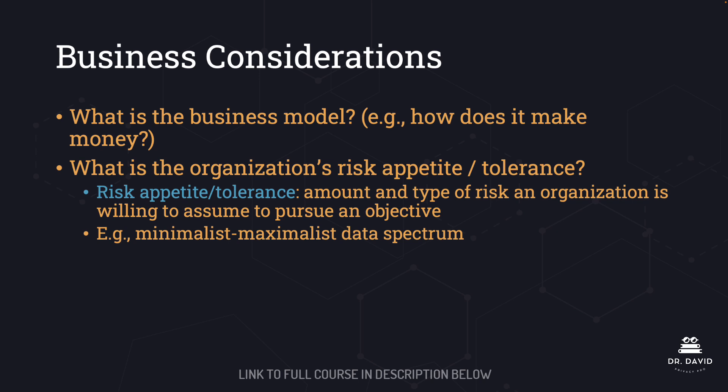This leads to the next question: what is the organization's risk appetite or tolerance? These two terms are often used interchangeably, so we will consider them synonymous here. Both terms are included because you're likely to see either or both on the exam. In short, an organization's risk appetite or tolerance is the amount and type of risk an organization is willing to assume to pursue an objective, typically a business objective.